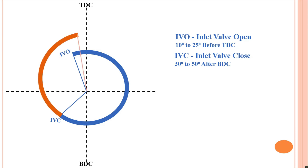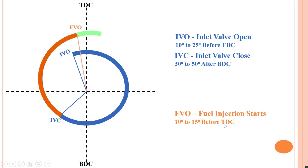The opening of the fuel valve before TDC is necessary for better evaporation and mixing of fuel. There is always a lag between the supply of fuel and ignition, so it is necessary to supply fuel a little earlier. Fuel injection starts 10 to 15 degrees before TDC and the fuel injection stops 15 to 25 degrees after TDC.